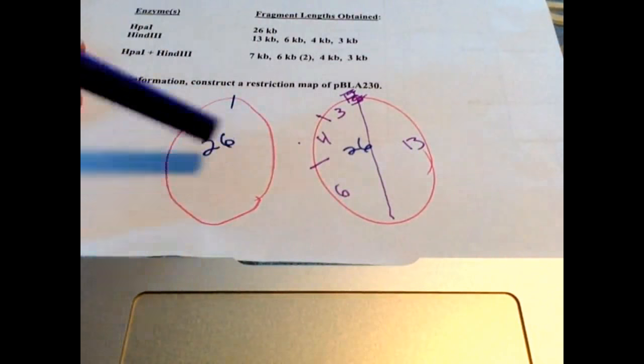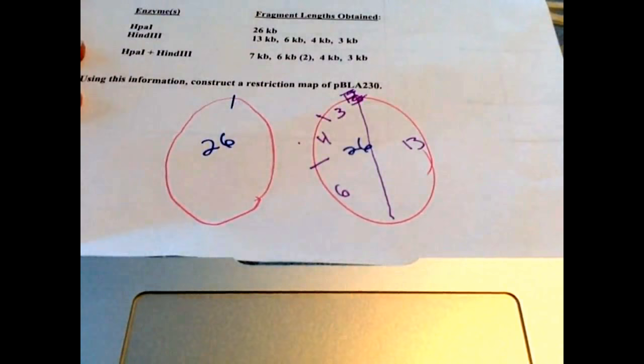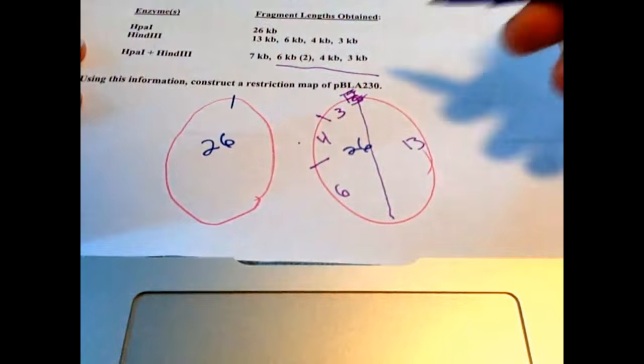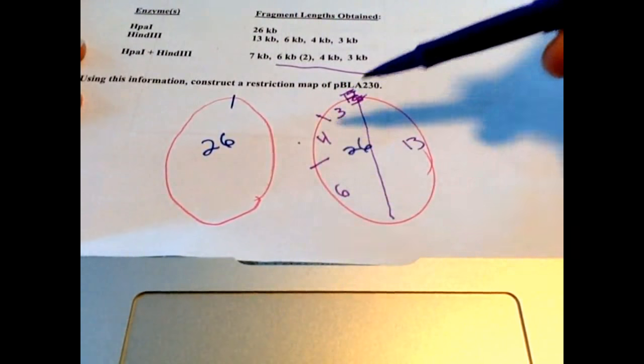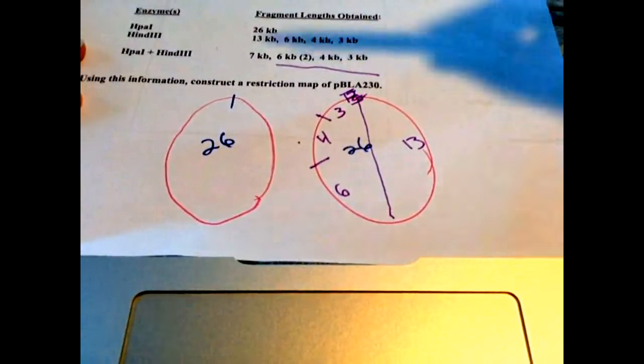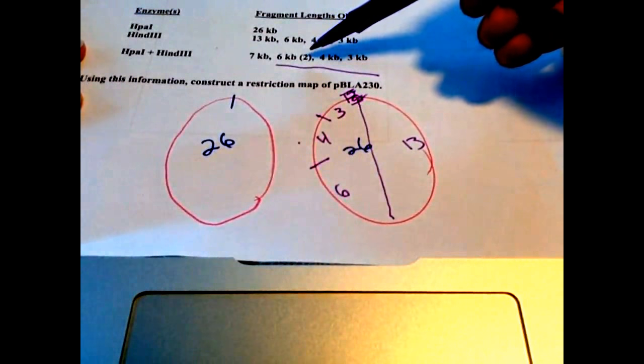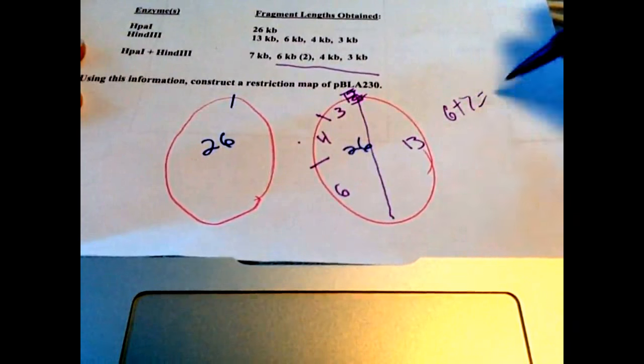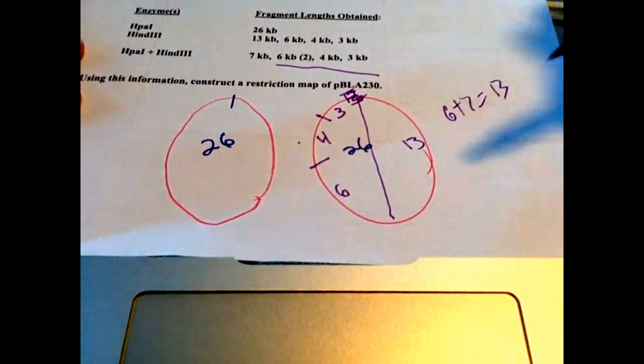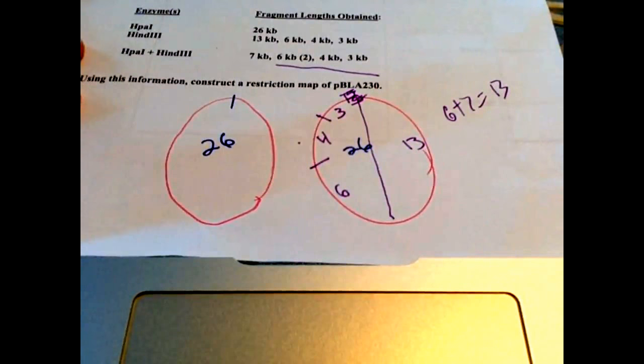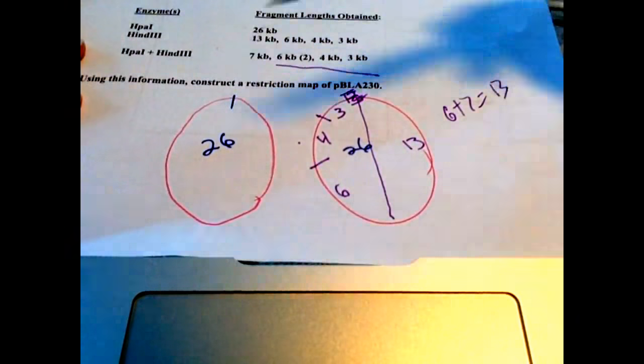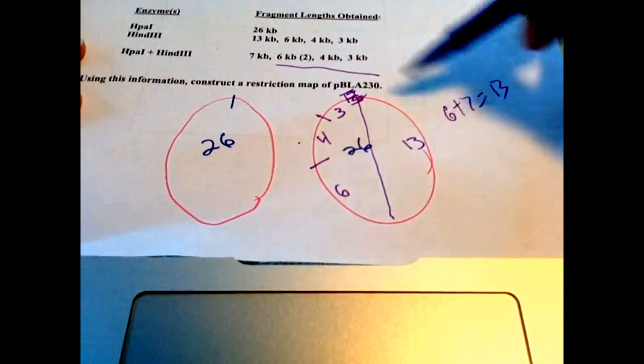Now in the double digest, you're going to have this one on top of that one, so I try to see how that's going to dissect. So I see that this has a 6, 4, and 3 still in it, which we already have a 6, 4, and 3. It makes a second 6 and a 7, and 6 plus 7 equals 13, right, which is this segment here.